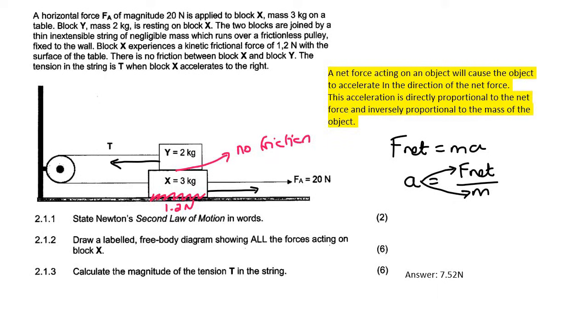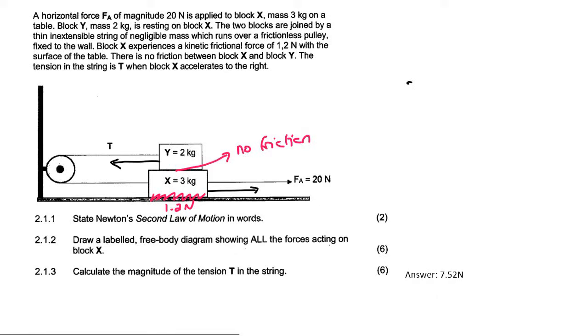Next question: draw a free body diagram showing all the forces acting on block X. So we know that on block X there would be gravity, there would be a normal force, there is an applied force, there is friction, and then there's also this rope that's keeping it back, which would be tension force.